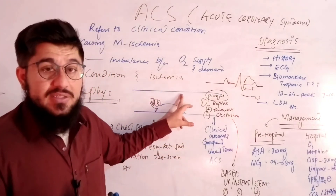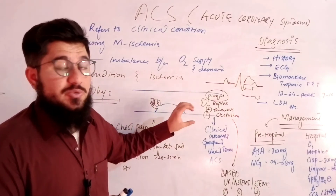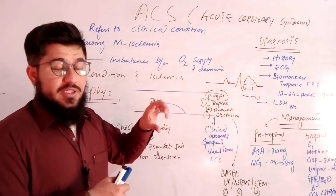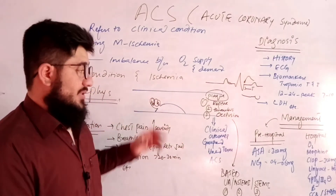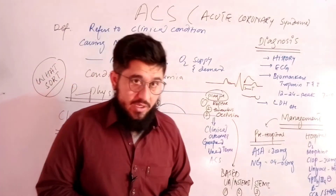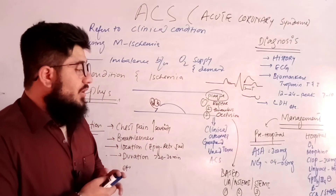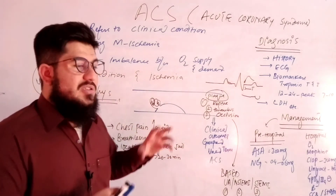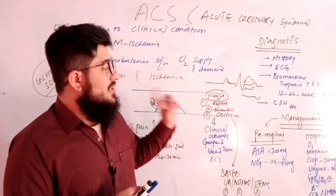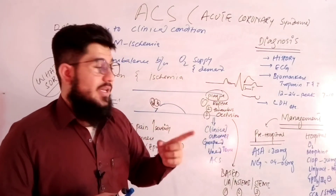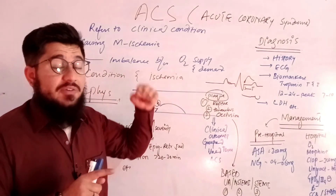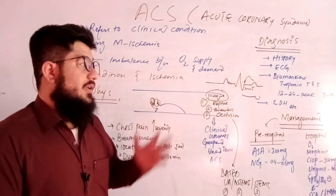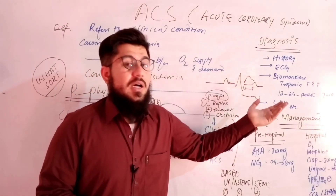ACE inhibitors help dilate blood vessels by reducing spasm, improving blood supply to the affected portion of the heart. If the patient is not responding and complications persist, we proceed to revascularization using a stent or bypass. After revascularization, the patient is maintained on dual antiplatelets plus ASA.